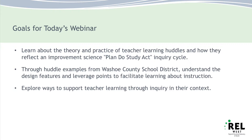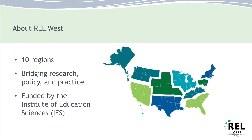The Regional Educational Laboratory West, or REL West, is one of 10 national education labs funded by the Institute for Education Sciences at the Department of Education. Our projects and partnerships are focused in California, Utah, Nevada, and Arizona, though our resources and webinars are available to anyone. Our mission is to translate research into practice among practitioners and policymakers and to support data-driven decision making in education.